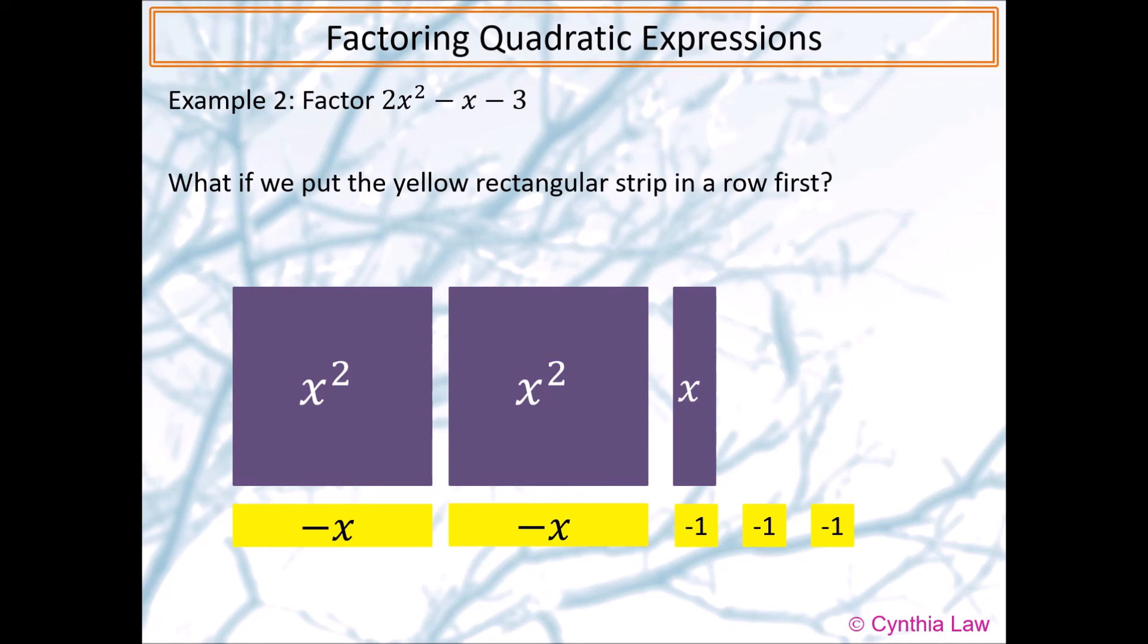However, we now have some empty space to fill in before we can make a large rectangle. We would need to add two more purple rectangular strips to make it work. But in this case, the sum of the extra strips added will not equal to zero. So, this approach does not work.